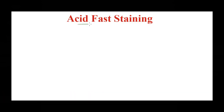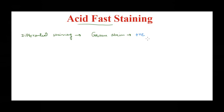Welcome back. Today we are talking about acid fast staining. Acid fast staining is a type of differential staining. In a previous video we talked about another differential staining procedure called gram staining, which differentiates between gram positive and gram negative bacteria based on their cell wall composition. There are certain bacteria that cannot be stained by gram stain, and for such bacteria we use the acid fast staining procedure — again due to differences in cell wall composition.